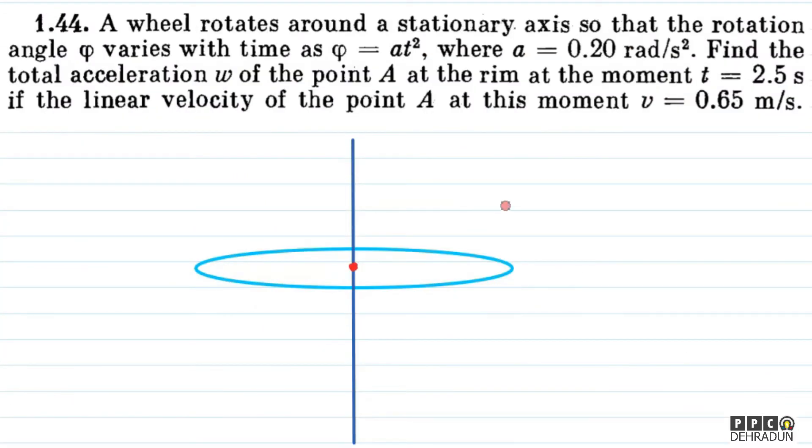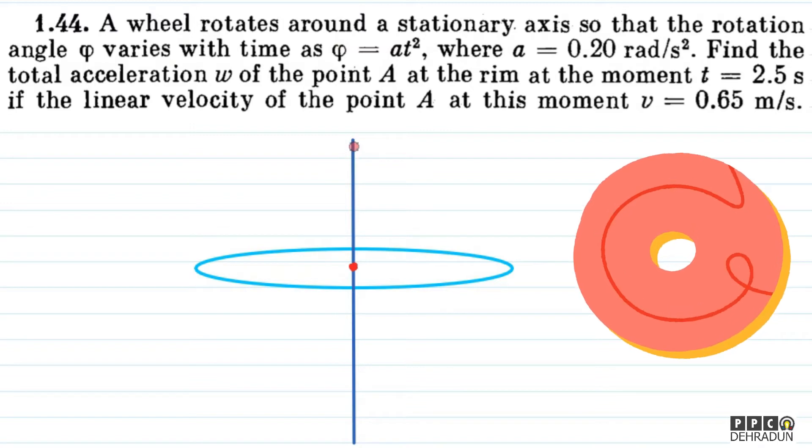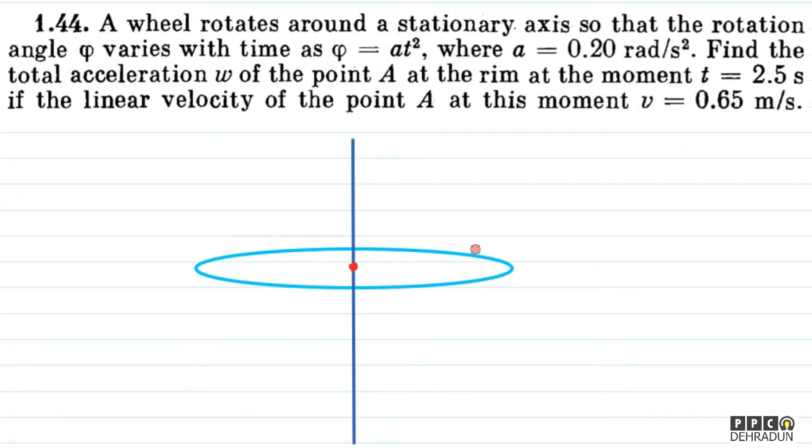So let's understand the problem first. We have a wheel rotating around a stationary axis. I've drawn the stationary axis and the wheel rotating around it. The rotation angle phi is given as varying with time as phi equals at squared.